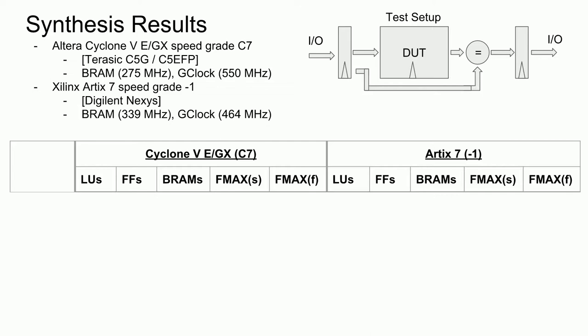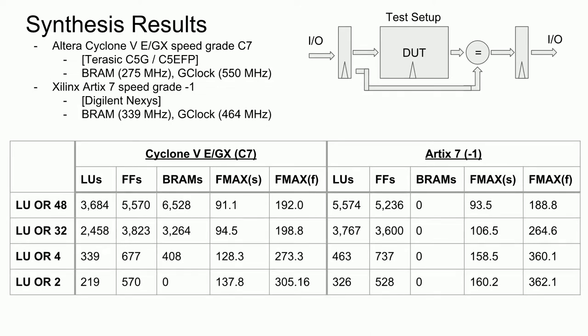One difference from the register file result table is that there are now slow and fast model clock frequencies for the Artix 7. It turns out that Vivado does output fast and slow models, but they have to be selected individually in a non-intuitive way. Let's see how the TLB file did using the AND-OR mask implementation. These results are expected, since the AND-OR gate combination relies heavily on logic. The Artix 7 implementations have higher slow and fast clock speeds than the Cyclone 5, consistent with results from the previous register optimization video.